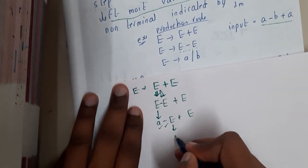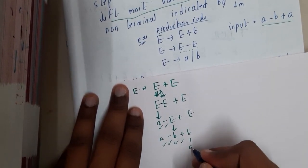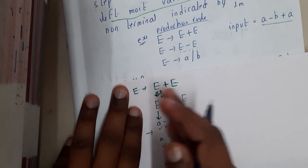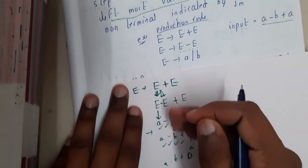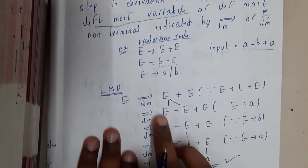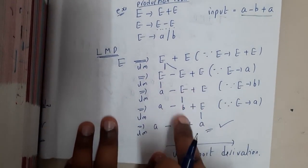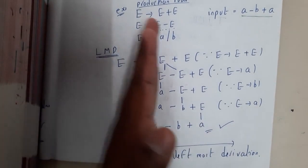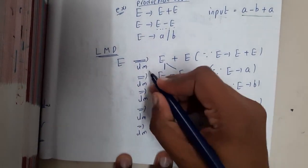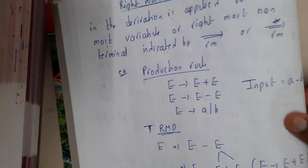Now E goes to A directly, then this A matched, the minus matched, and E goes to B. Then this matches, this matches, and E is replaced by A — and we have reached the final string. The key point is that from the left-hand side I was always checking for expansion. That is why it is called leftmost derivation. I have clearly written the productions with the LM arrow.